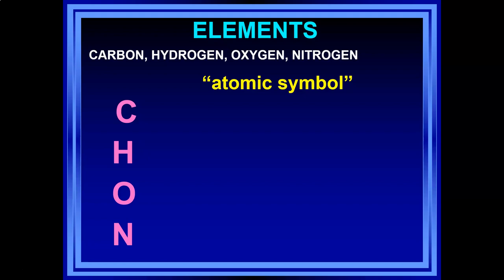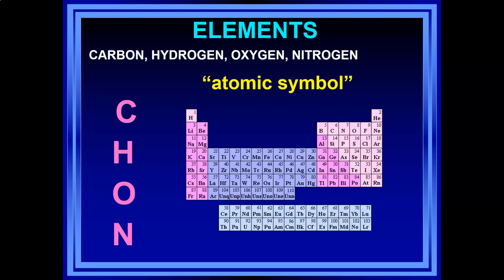You might be familiar with the periodic table of the elements. In the little squares are lots of atomic symbols. There are more that are important biologically — like calcium, sodium, iron, and potassium. We're not memorizing the periodic table, but we are recognizing the chemicals that come up in our own metabolism.